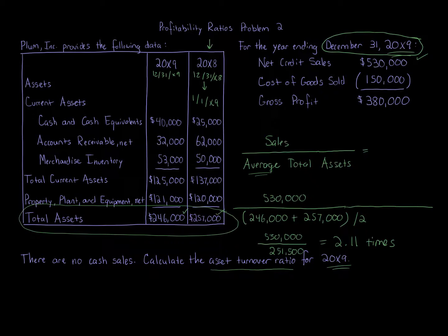This asset turnover ratio measures how effectively a company uses its assets. A higher ratio is better — if you have a large amount of sales relative to your assets, you're doing a lot with a little. A very low ratio means you're not using assets effectively, such as having a billion dollars in assets but only a million in sales. Keep in mind this varies by industry, but this ratio is all about measuring how effectively a company uses its assets.